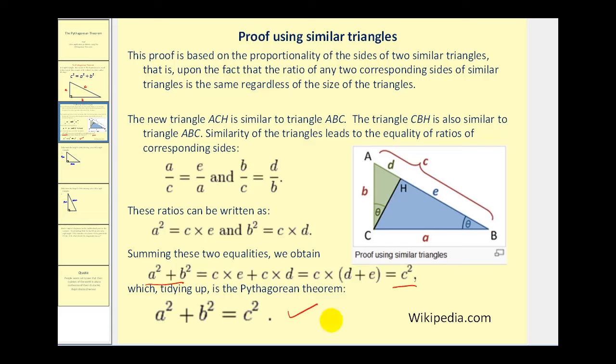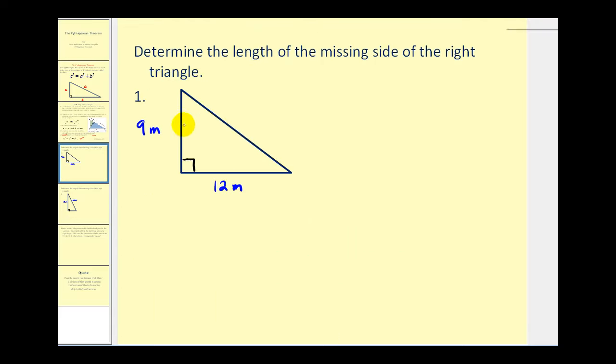Now that we've proven it, let's go ahead and try some problems. We want to find the length of the missing side of the right triangle. So we'll start with our theorem: C squared equals A squared plus B squared. C must be the hypotenuse, which is this side here because it's opposite the right angle. And these two would be the legs, so we'll label these A and B.